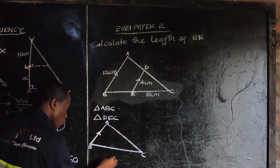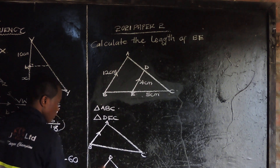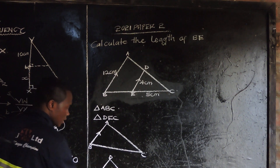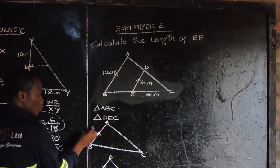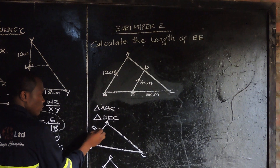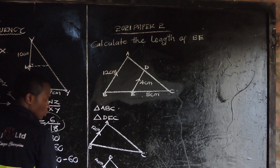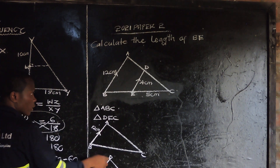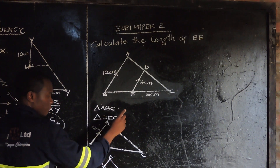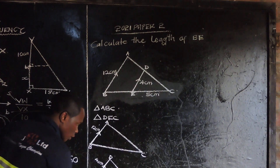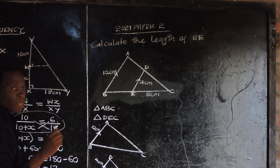Then we also have a small one, which is looking like this. This is D, this is E, and this is C. These sides are parallel. This side is 12 and this one is 4 centimeters.